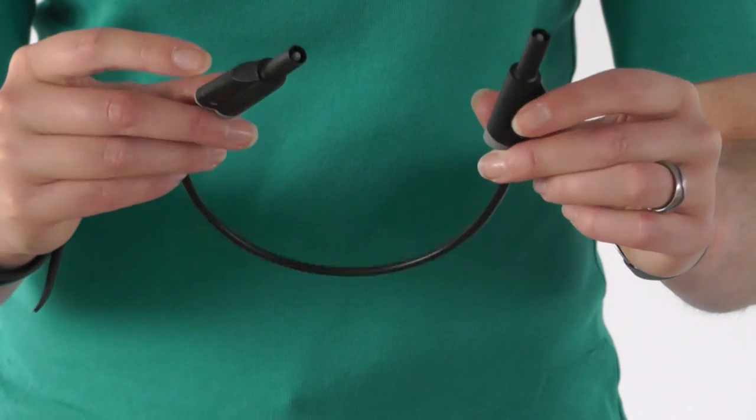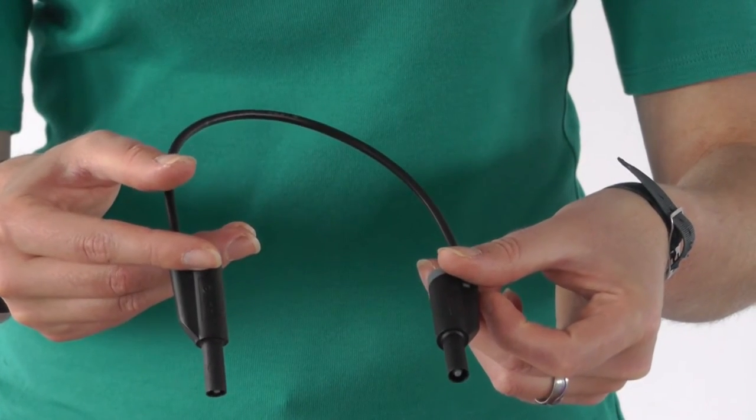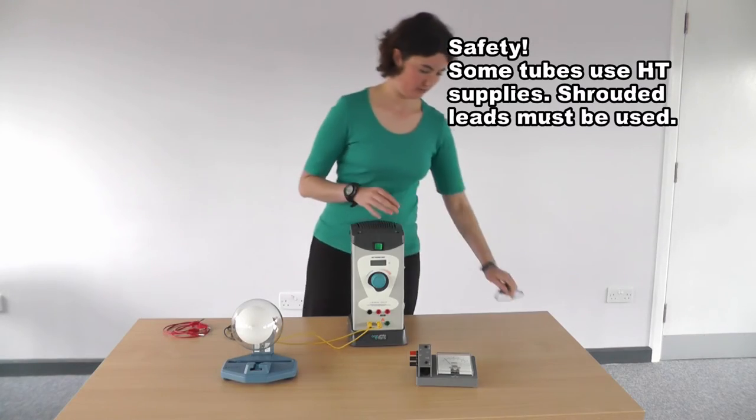This is not true with the EHT supply used in some electron tubes. With them, you absolutely must use these shrouded leads.